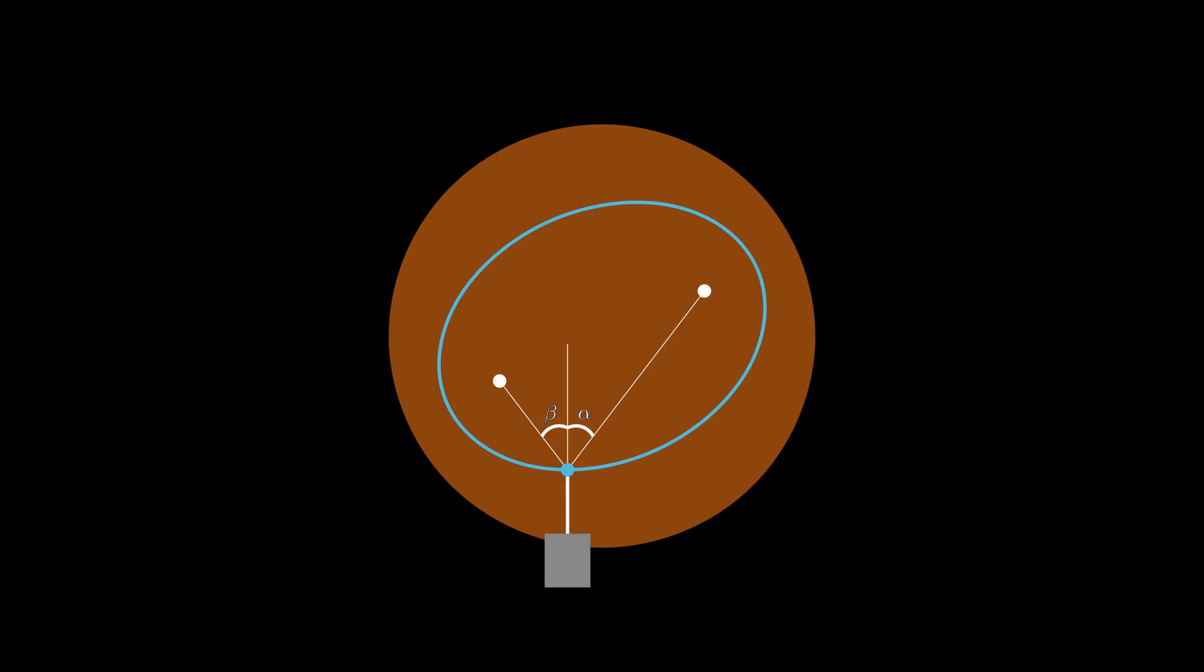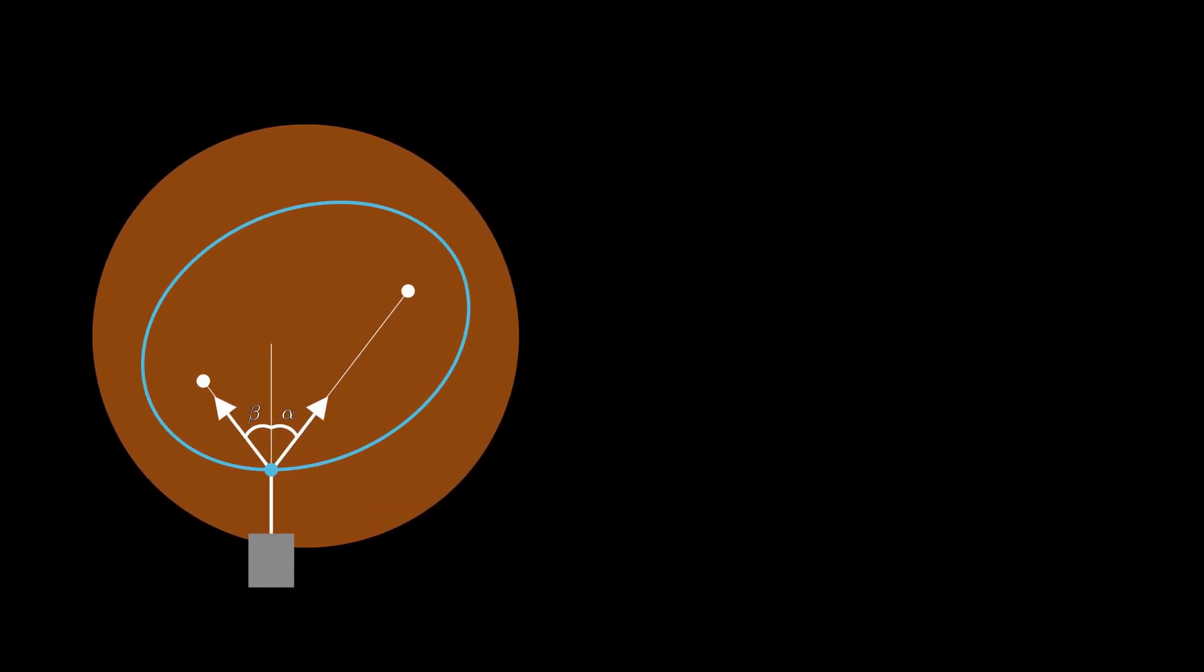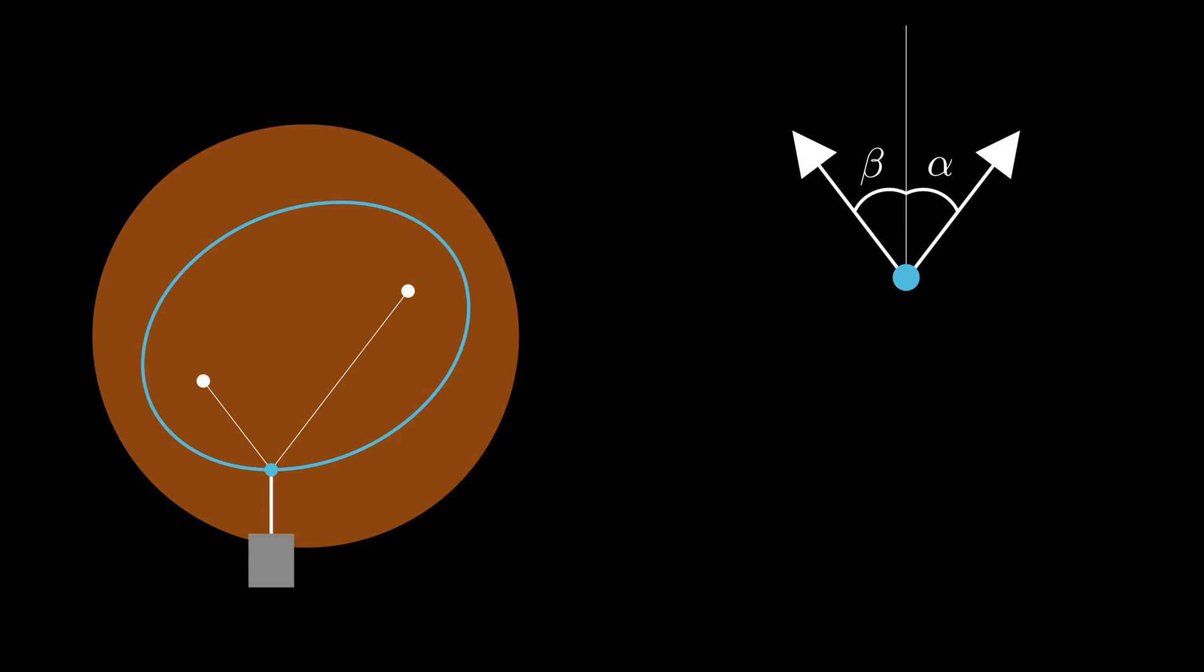Here comes the fun part. Let's look at the physics of the situation. We know that strings can only pull in the direction along which they are taut. So we can draw in two tensional forces pointing at the two thumbtacks. The sketch is getting a bit cluttered, so I'll extract the important bits and zoom in. Since the tension is constant throughout the string, we know that these two forces must be equal in magnitude. So let's label them both T.